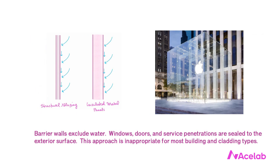The second approach is the exclusion approach. These are called barrier walls or perfect barrier walls, and they work by being perfect — or very near perfect — at blocking water entry at their outermost surface. This is the least common strategy, though not rare. The materials we like to build with for cost and aesthetic reasons tend not to lend themselves well to perfectly blocking water.